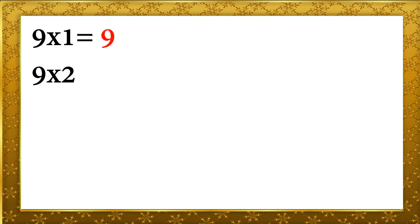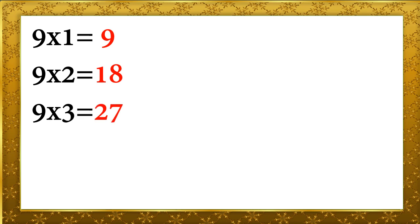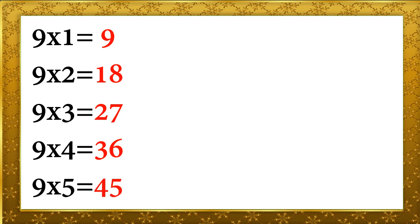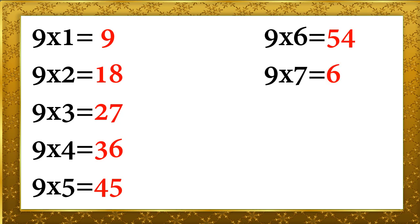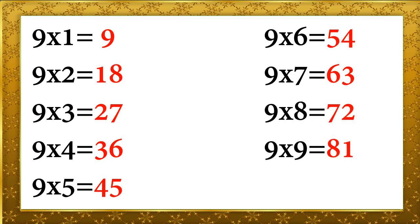9 ones are 9, 9 twos are 18, 9 threes are 27, 9 fours are 36, 9 fives are 45, 9 sixes are 54, 9 sevens are 63, 9 eights are 72, 9 nines are 81, 9 tens are 90.